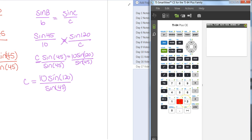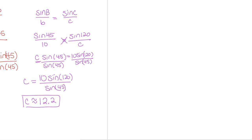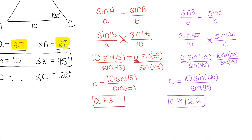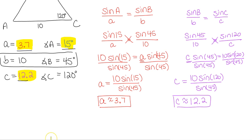Double-checking the calculator entry: 10 times sine of 120, divided by sine of 45. We get 12.24, and rounding to the nearest tenth gives us 12.2. That completes the triangle — side c is 12.2.